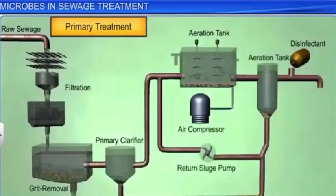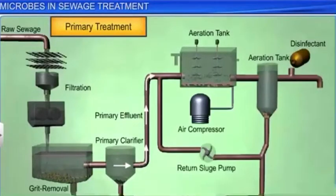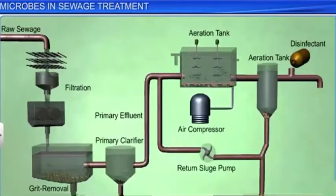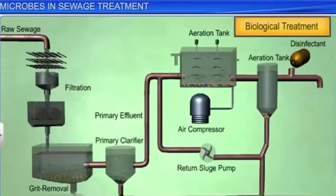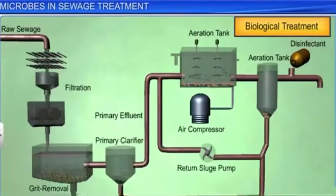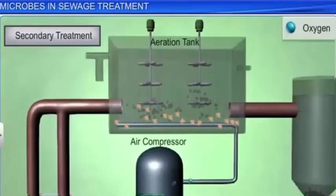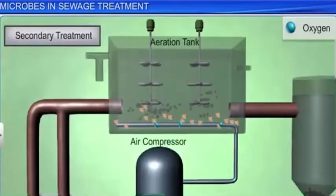Primary effluents are now transferred from the primary settling tank to large aeration tanks for secondary treatment, also known as biological treatment. Secondary treatment aims to reduce organic matter in the effluents. In the aeration tanks, the effluents are constantly agitated mechanically and oxygen is pumped into them.